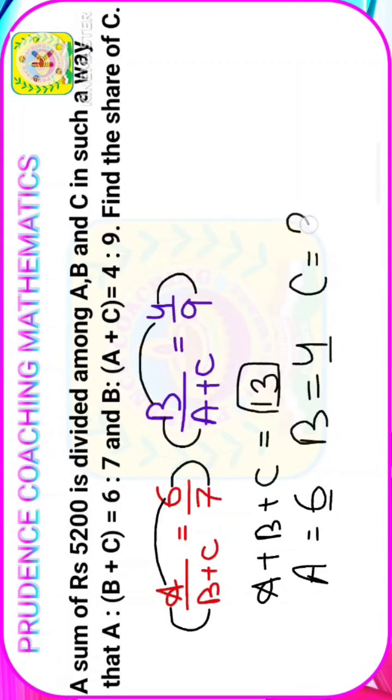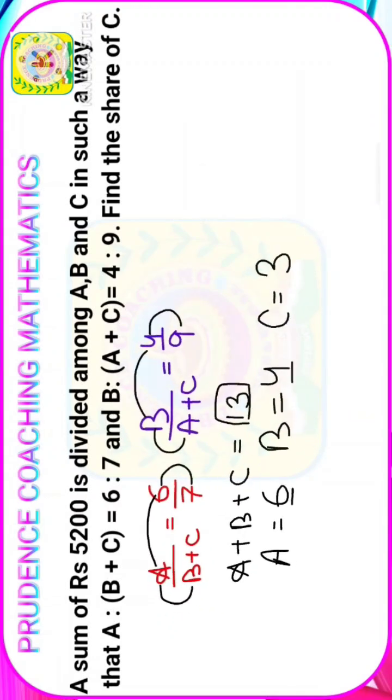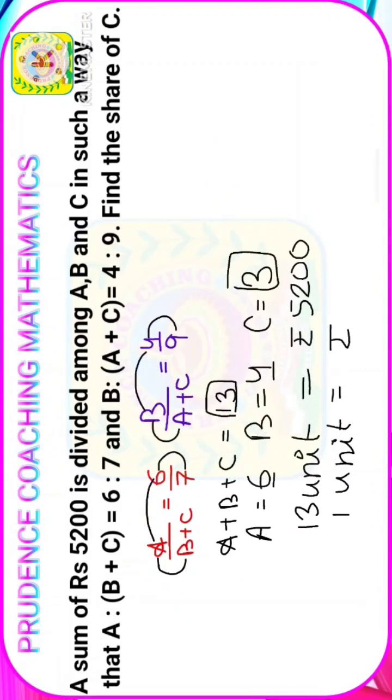Now, according to the question, it is given here that A plus B plus C, that is 13 units, is equal to rupees 5200. You are asked to find out the value of 3 units, that is the share of C.